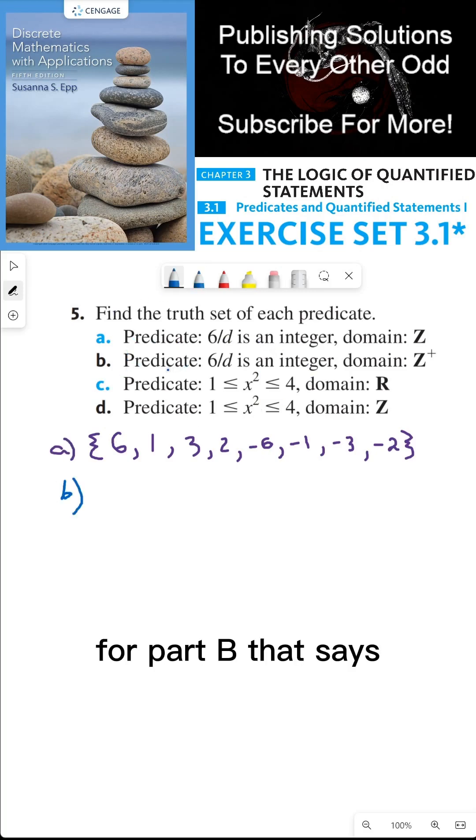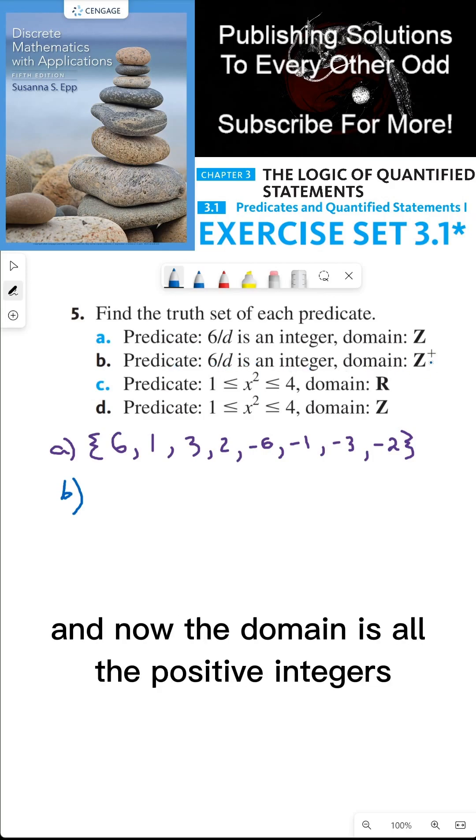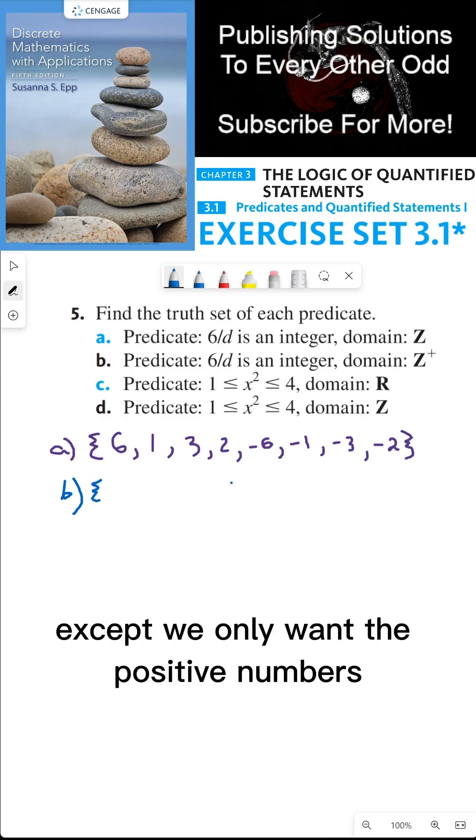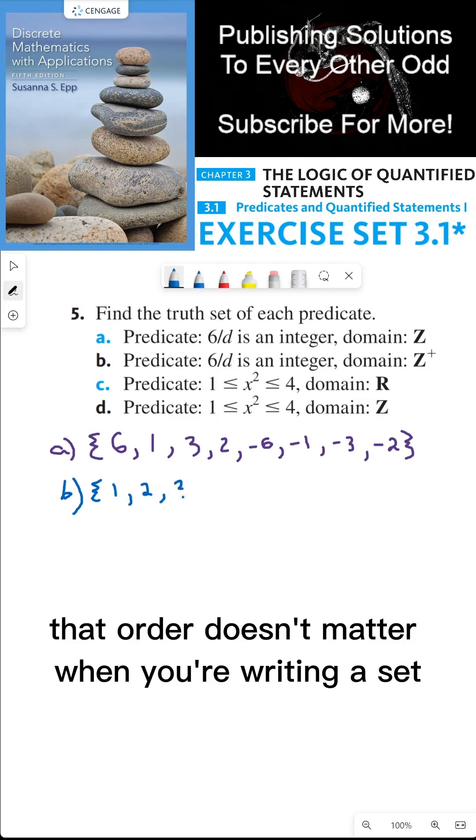For part B, it says the predicate 6 over D is an integer, and now the domain is all the positive integers. So this is going to be the same set as for part A, except we only want the positive numbers. So 1, 2, 3, and 6. And remember that order doesn't matter when you're writing a set.